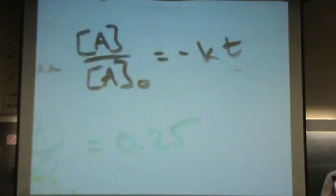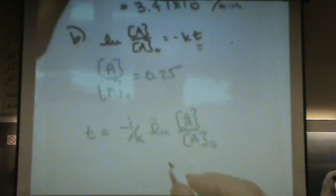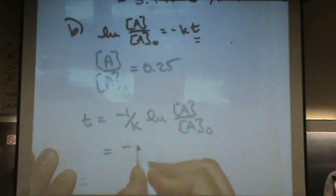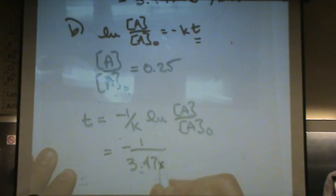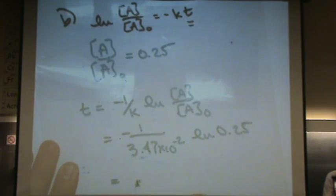Okay. t equals minus 1 over k. That's log of a over a naught. Oh, too bad for you. Okay. I was not fast enough. Minus 1 over 3.47 times 10 to the minus 2. Natural log of 0.25. And that will turn out to be 40 minutes.